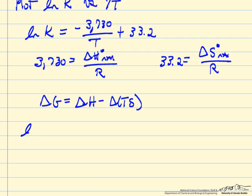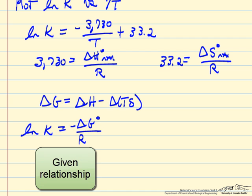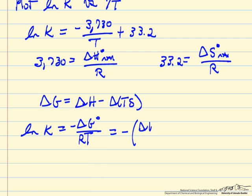Remember delta G is delta H minus T delta S, and so then it naturally follows from that to show that the intercept is delta S. So let's look at this.